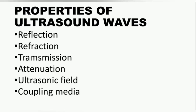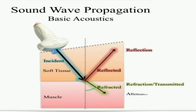When ultrasound waves travel from one medium to another, they do not travel along a straight path; instead they get deviated from their original path. This is called refraction. Due to refraction, the ultrasound waves do not reach the target tissues. To avoid refraction, the treatment technique should be proper — the ultrasound head should be kept perpendicular to the surface of the treatment area so that incident waves travel along the normal, allowing the waves to reach the target area.